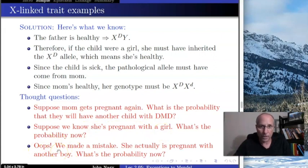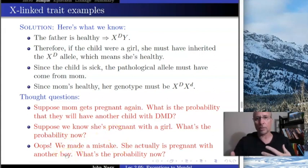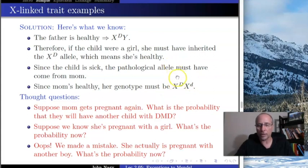But suppose they made a mistake, and when they did the ultrasound analysis they discovered it's actually a boy, not a girl. Now what's the probability? The answer is not one quarter — because now we know it's a boy and the father had to have given the Y. So since the father giving Y happens with probability one, half the time the mom gives X^D giving a healthy boy, and half the time she gives X^d giving a DMD boy. So the probability is now one half. We have to be careful to follow that through.